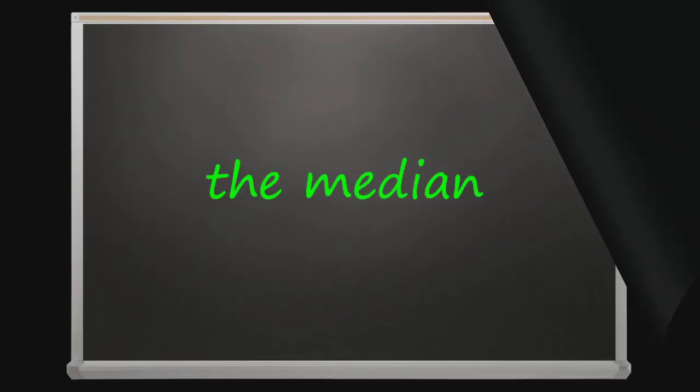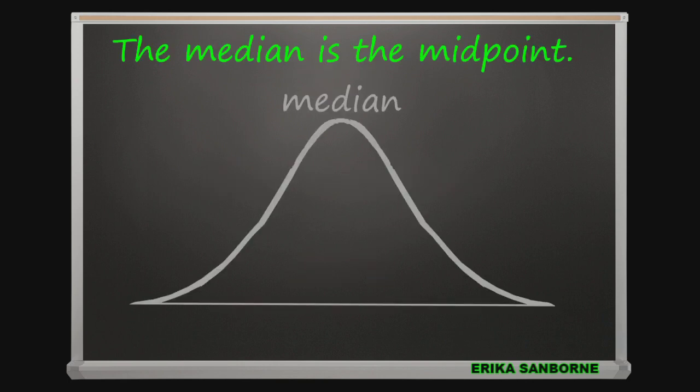The median is the middle score when the data are put in order from low to high. Half the scores are on each side of the median. The median is the midpoint.